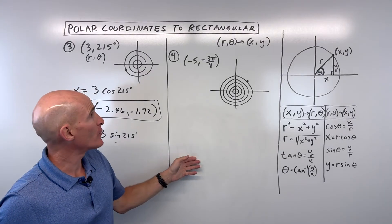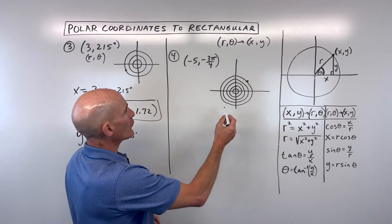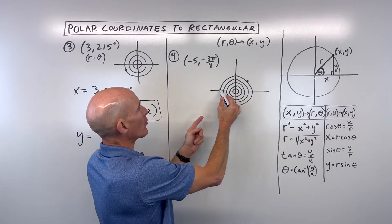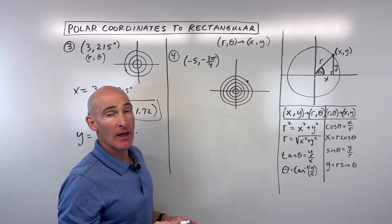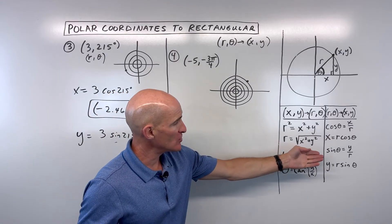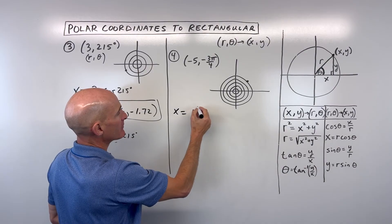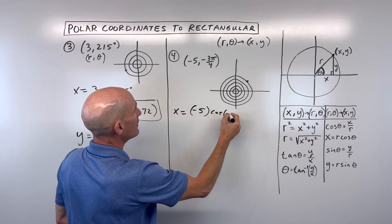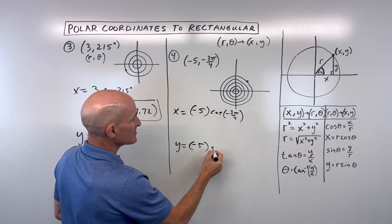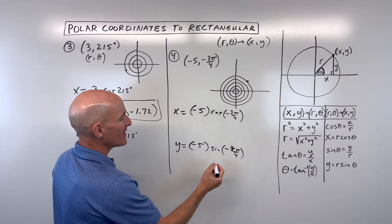For example 4, we have (-5, -3π/4). A negative radius means go left 5, and a negative angle means go clockwise 3 fourths of pi — that's our point. We want the rectangular form x, y. So x equals negative 5 times cosine of negative 3π/4, and y equals negative 5 times sine of negative 3π/4.